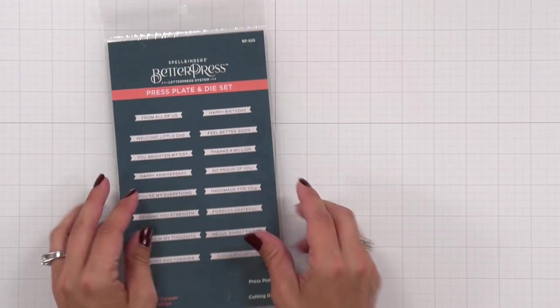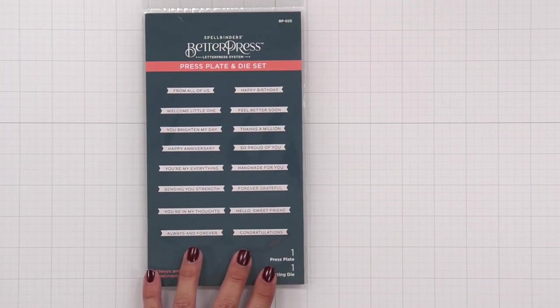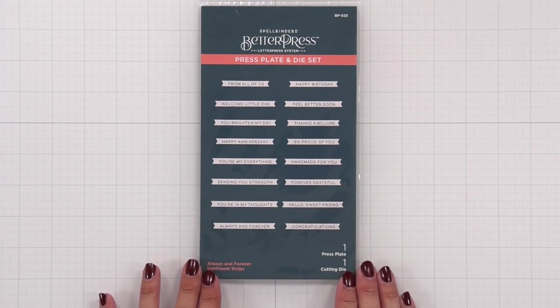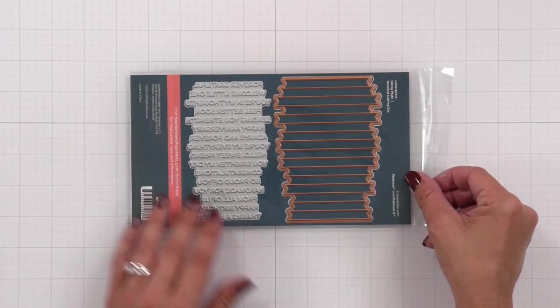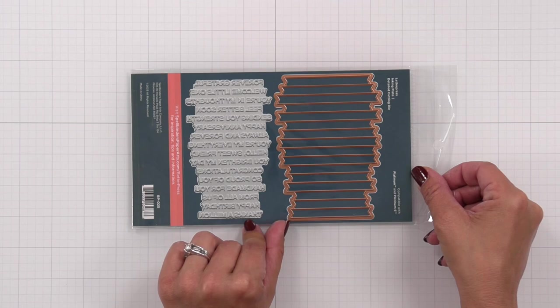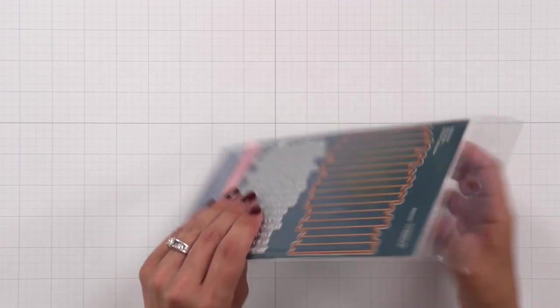There are a few other products that go with the Better Press that Spellbinders has sent me. This is the Always and Forever. So this is a sentiment set. It has all the sentiments in one pass so you can do it all at once. And also a coordinating die to die cut them out all at once.